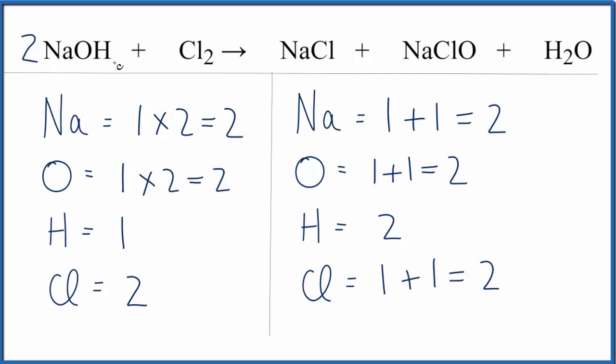And remember this two applies to everything here in this NaOH, in this sodium hydroxide compound. So the hydrogen, one times two, that gives us two. And the hydrogens are balanced. And now everything is balanced in this equation.